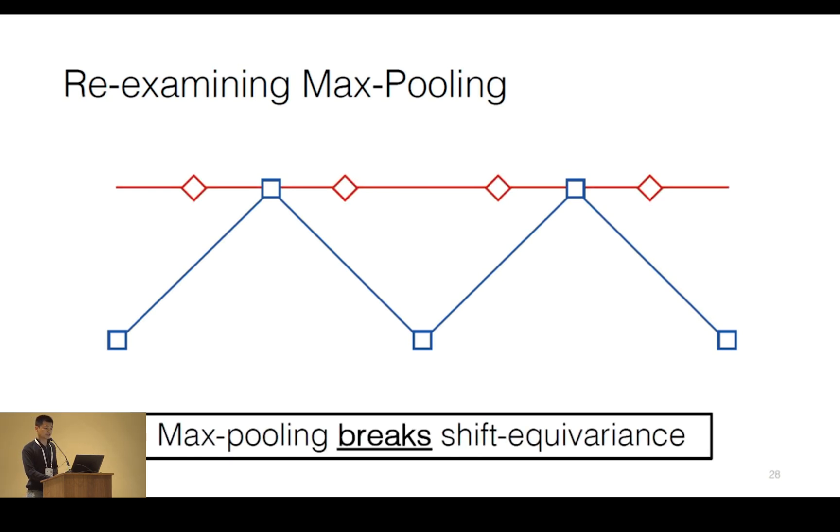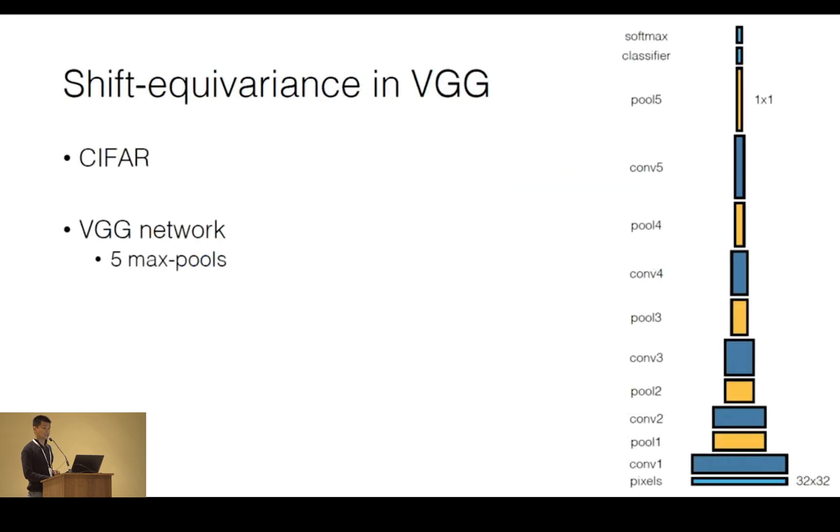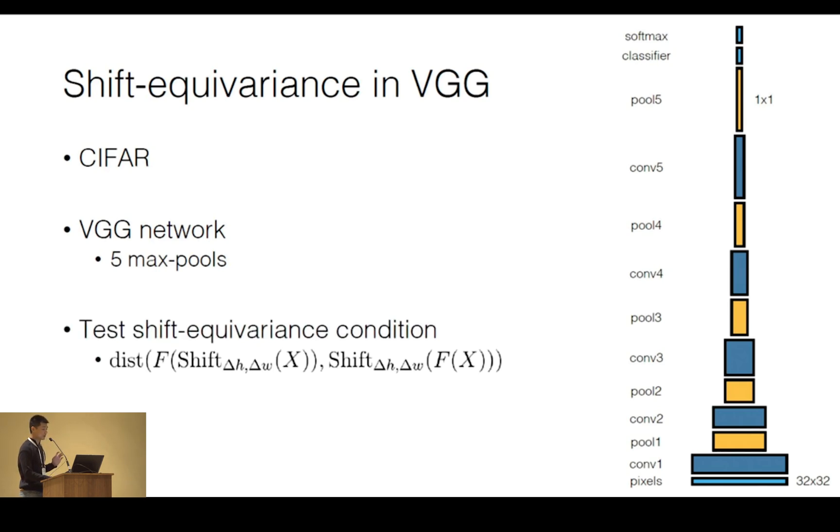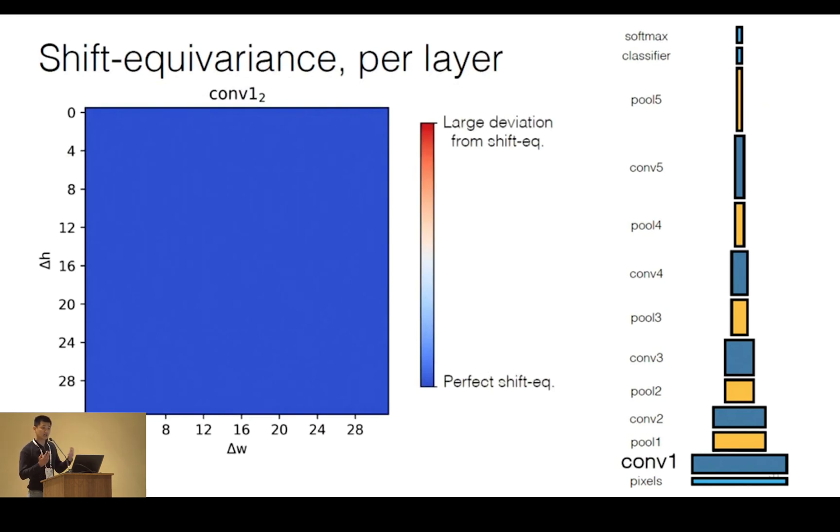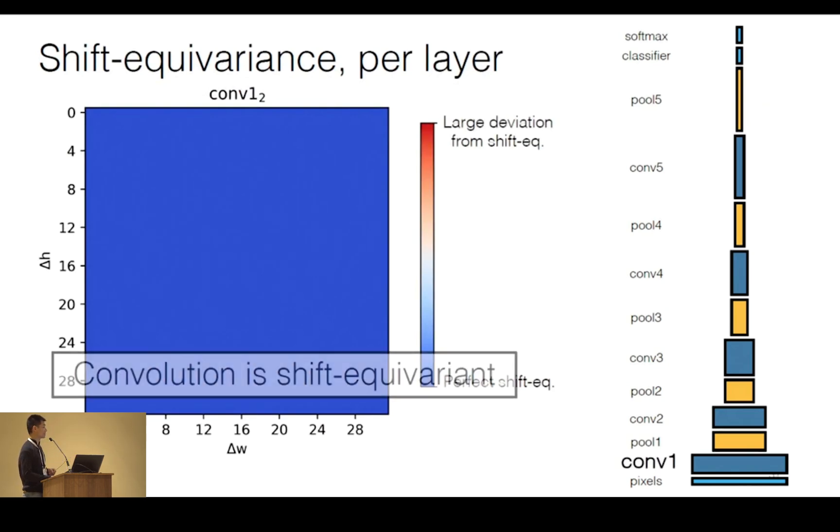Let's see if this happens in a more realistic scenario. We can do CIFAR classification using the VGG network, and we can probe each of the internal layers to see how shift-equivariant they are. Shift-equivariance means that you can do a shifting operation and a feature extraction operation in either order. That is, these two operations should be commutable. Now, if we look at the first conv layer, it is perfectly shift-equivariant, as we know. And this is a good sanity check for us.